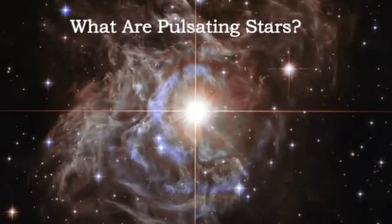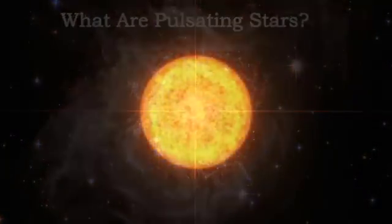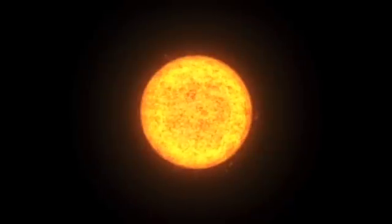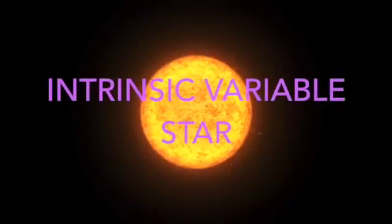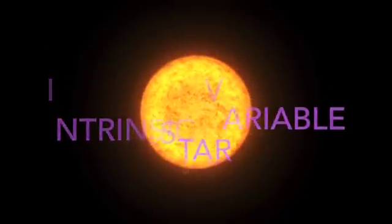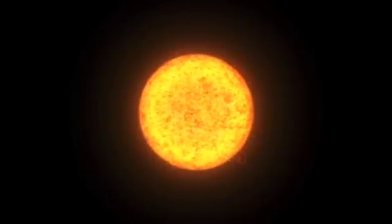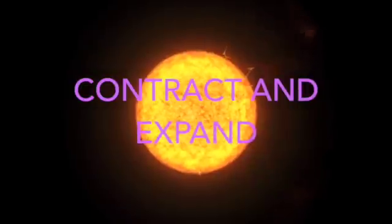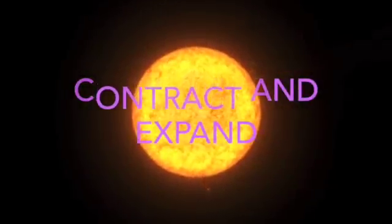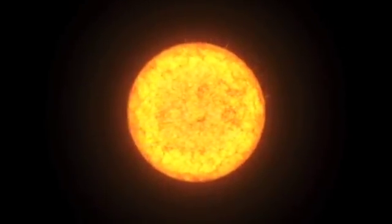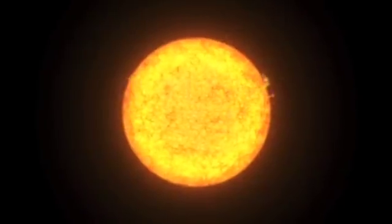What are pulsating stars? Pulsating stars are an intrinsic variable star that have a variation of brightness due to a physical change within the star. Their surface layers literally contract and expand periodically. The amount of time within that period further determines the amount of mass and the evolutionary stage that star is in.